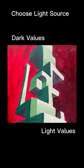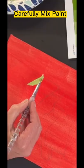Once the value scale is done, we check for accuracy and then we move on to the painting and we paint one side with our darker values and the other with the lighter values.